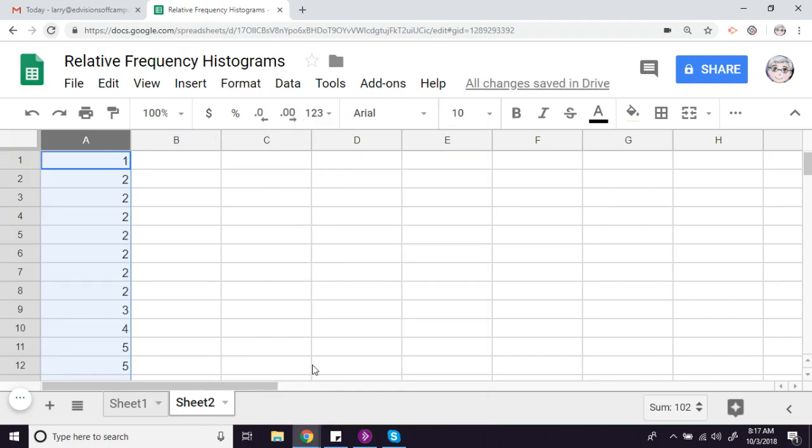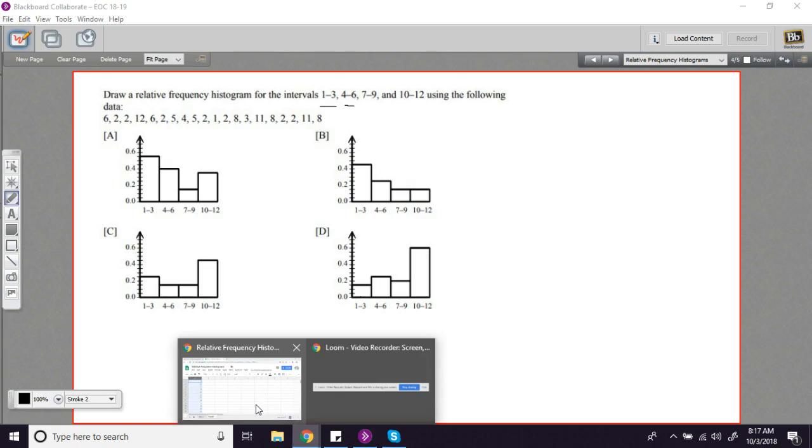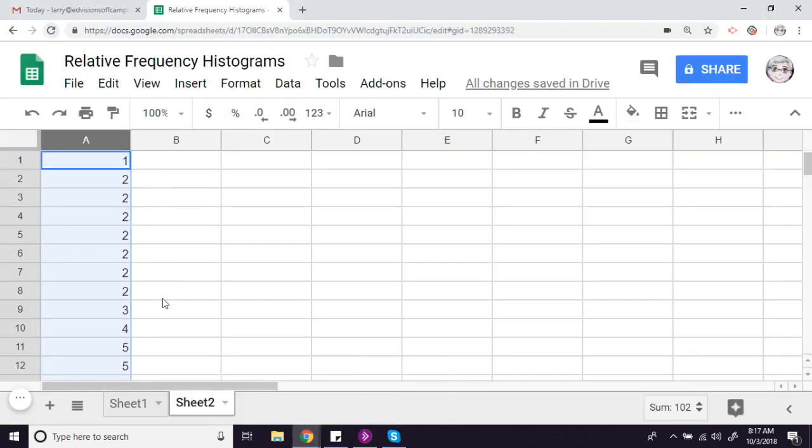And take a moment to remind ourselves what the intervals are. This is a little different. We want 1 to 3, 4 to 6, 7 to 9, 10 to 12. So there's three, a range of three in each of these data points. So 1 to 3 would be to here. So that's 9 in that first one.